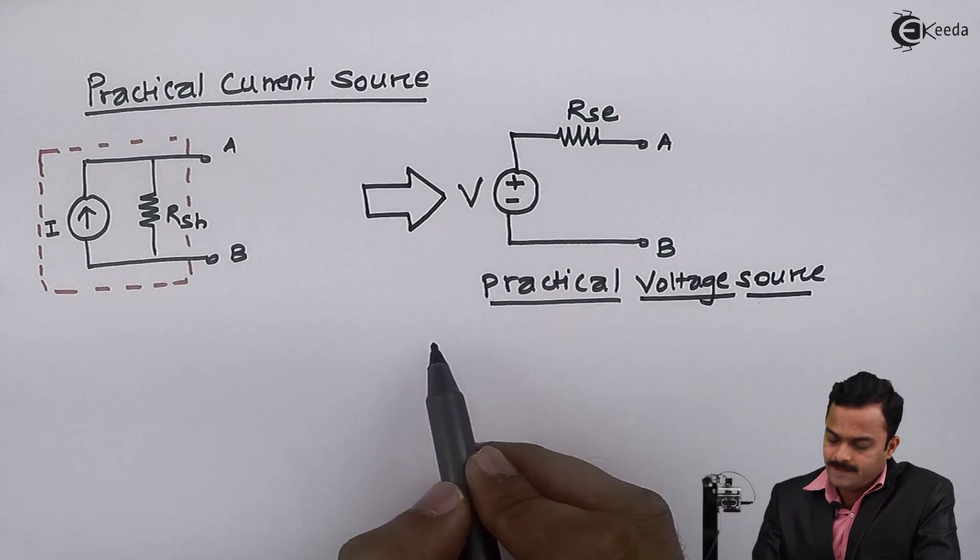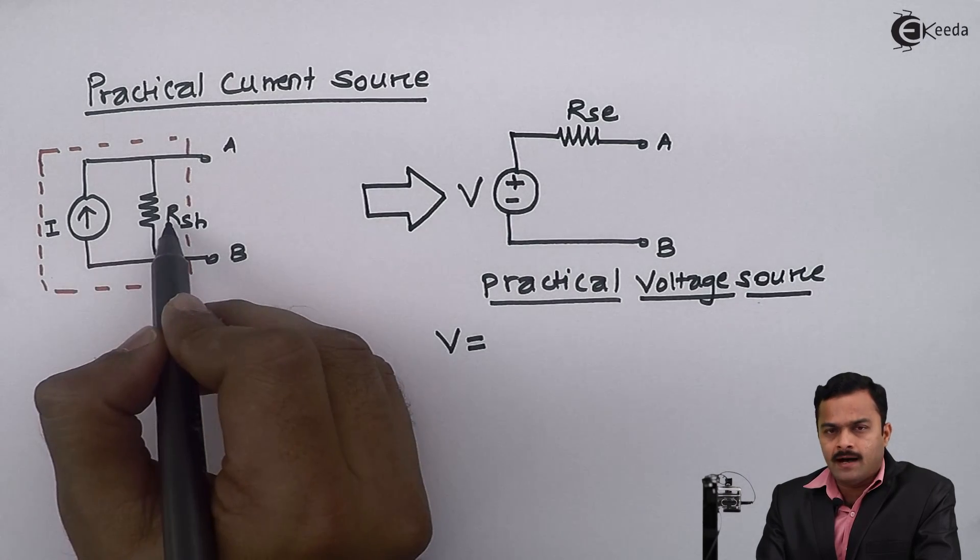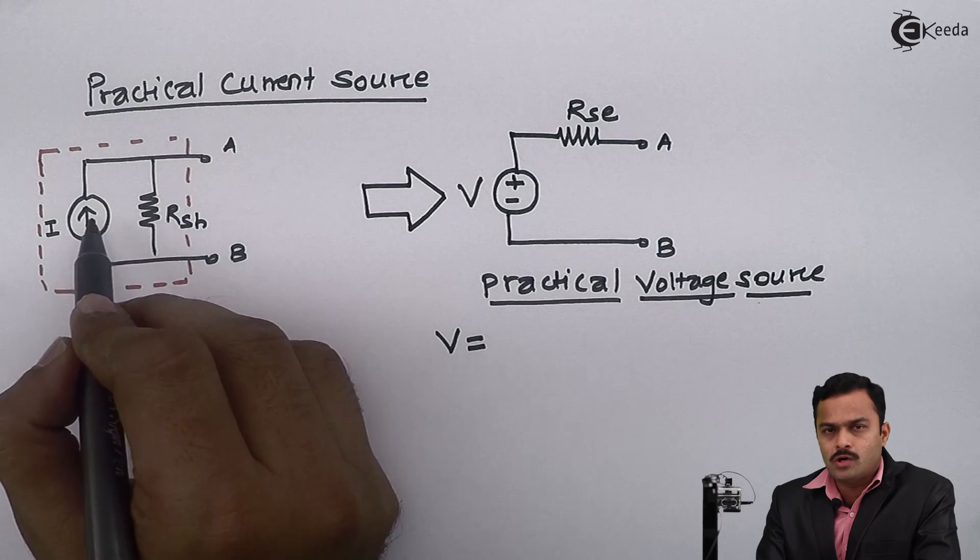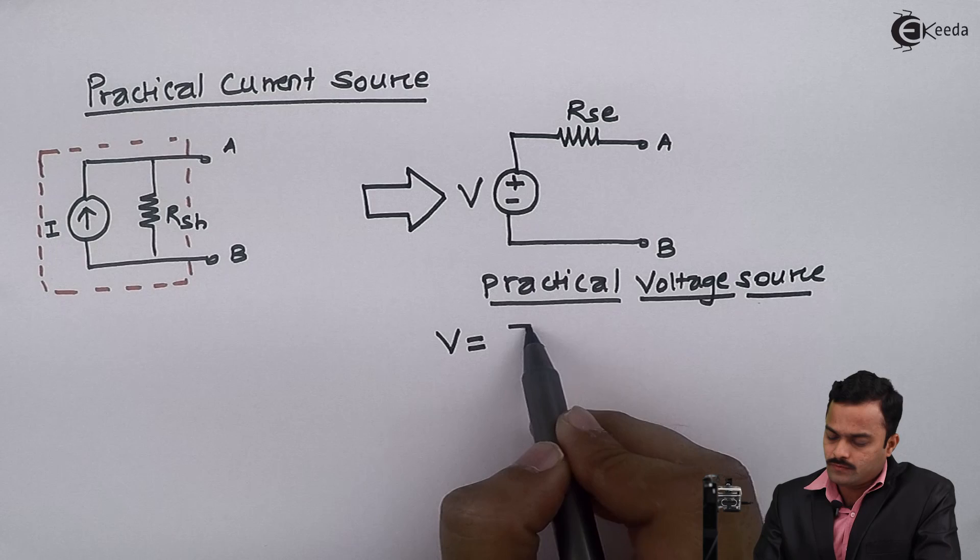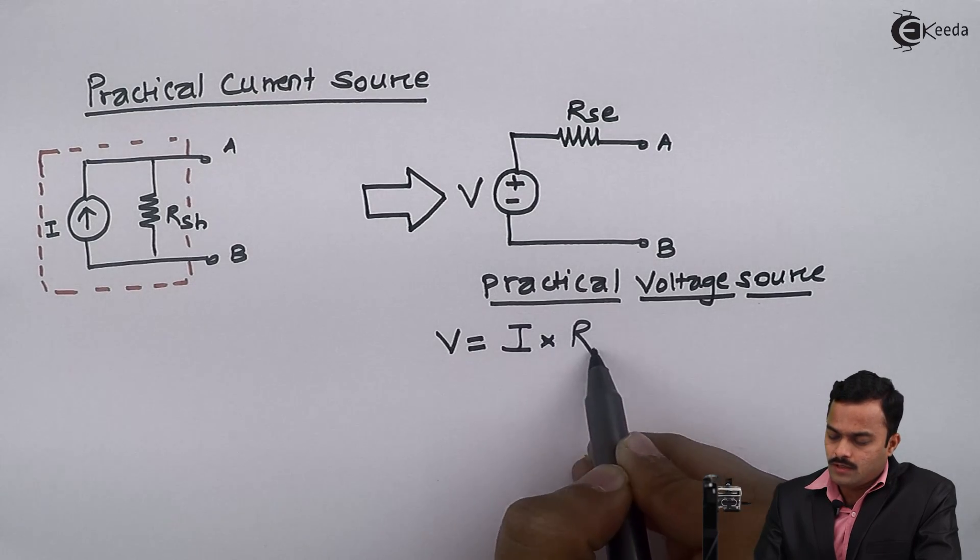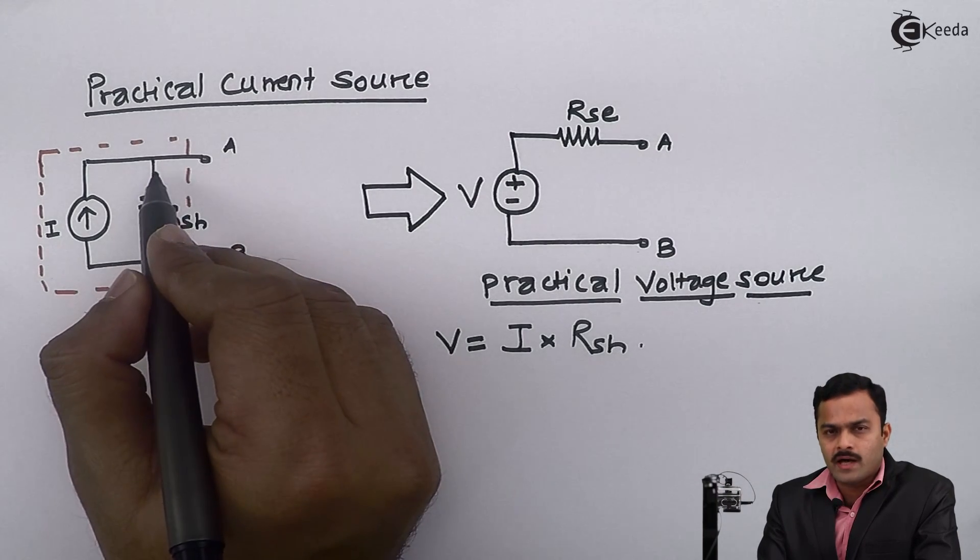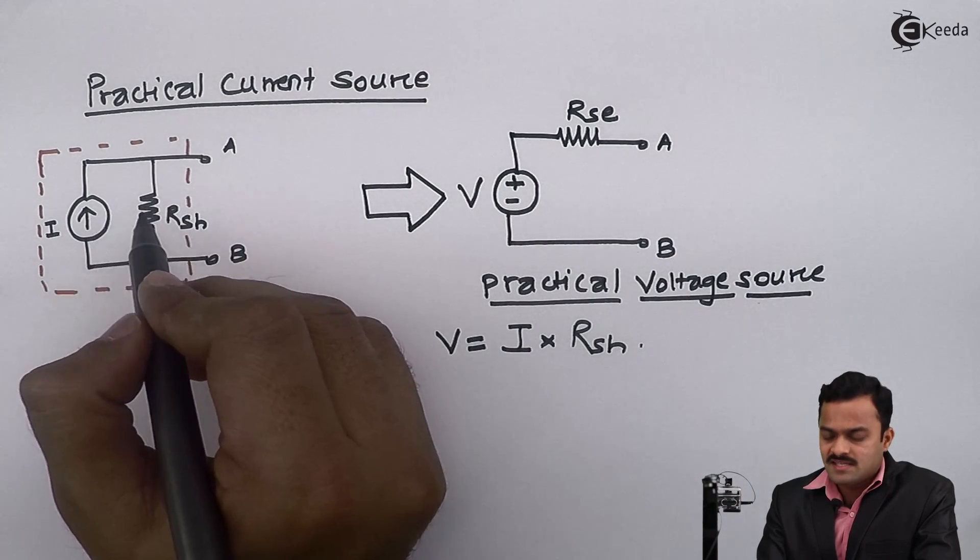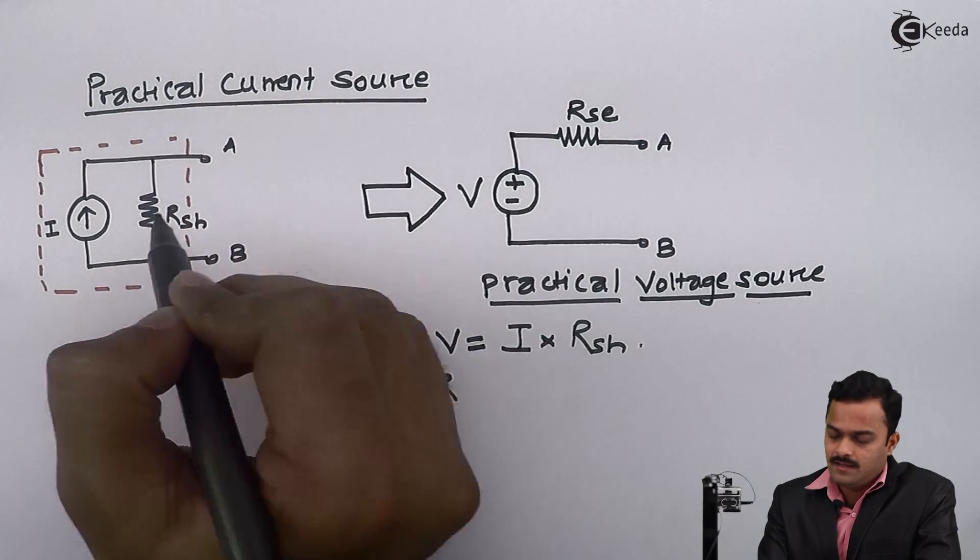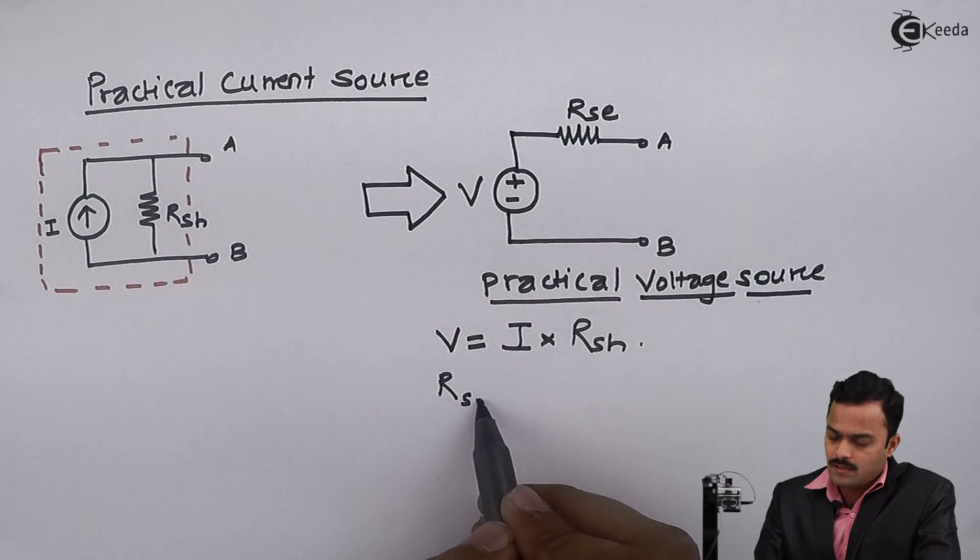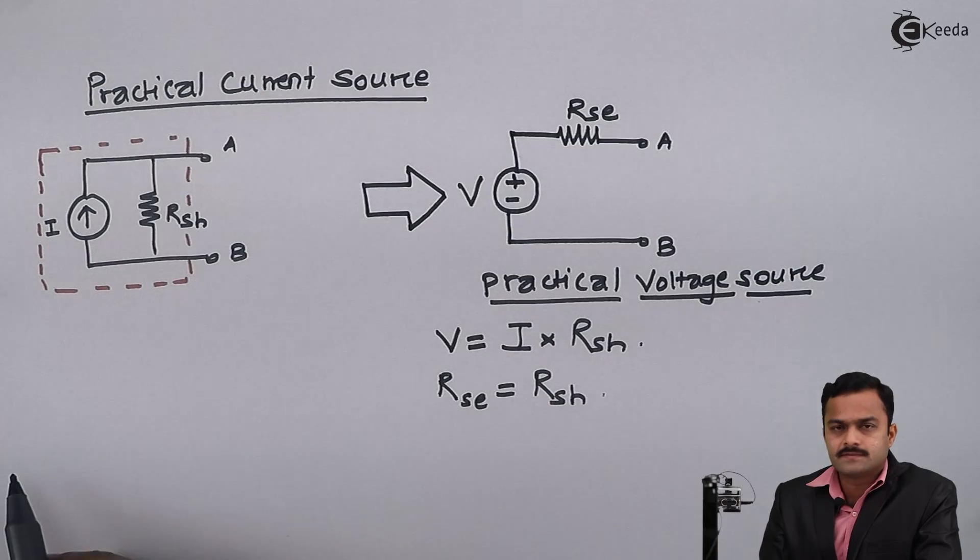Voltage V is nothing but multiplication of I and RSH. Simple Ohm's law you have to apply and get this equivalent voltage value will be equal to I into RSH. Whatever the resistor earlier we are having with a current source, same resistor you will get. Only thing is that here it is parallel, but in case of a voltage source it will be series. The value will be same as RSH.